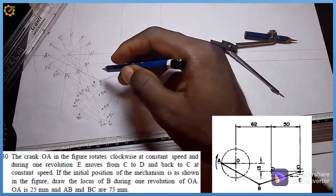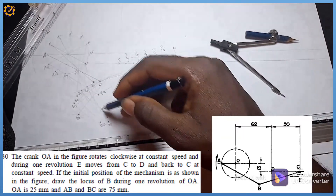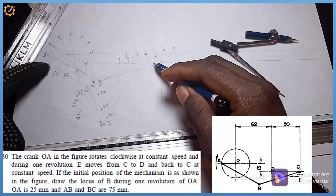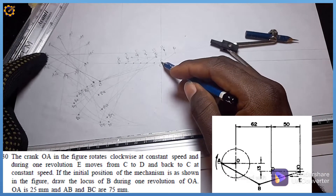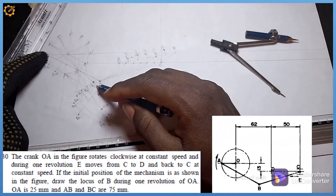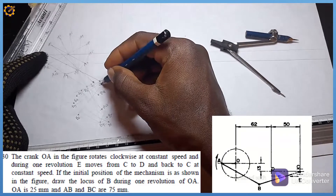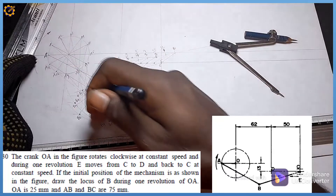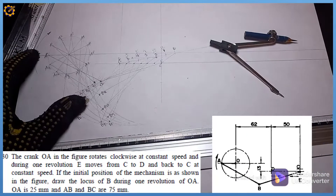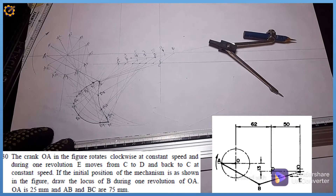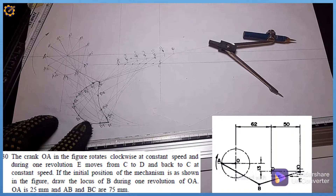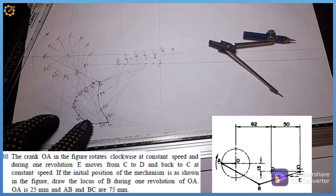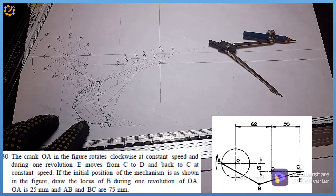The next step is to pick your French curve and join each of the marked B points together to draw the locus. By the time you reach A11 it comes back to C, returning to the starting point B0. So pick your French curve, join all the points together, and that is the locus of point B for the problem on the screen. Thank you — you can also follow us on Instagram, Facebook, and YouTube at Michael Tech.